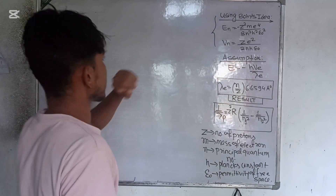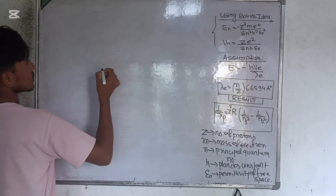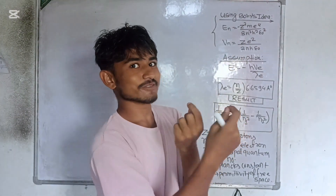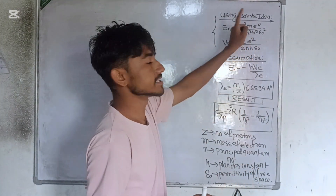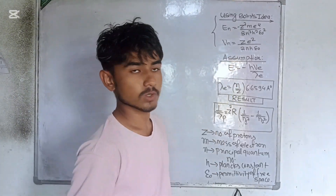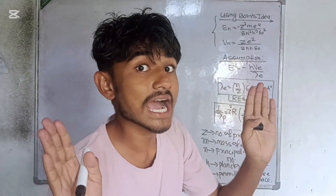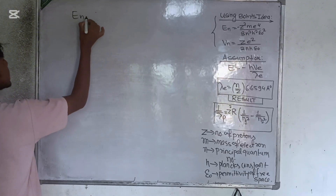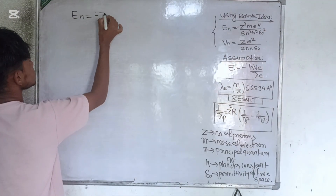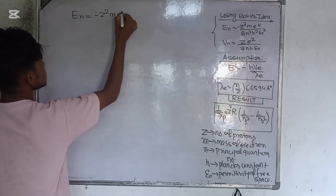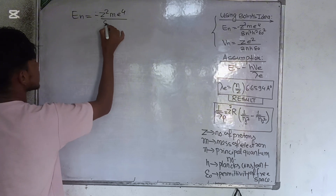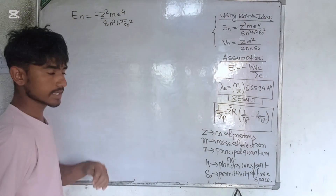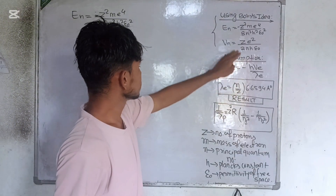I am using this relation for hydrogen, so I set Z = 1 — one number of protons, no isotopes. The energy of the nth orbit is: E_n = −Z²me⁴ / (8n²h²ε₀²).